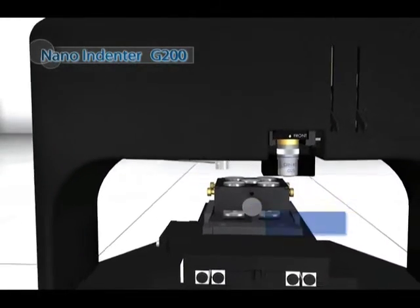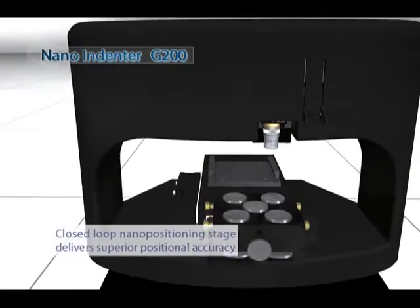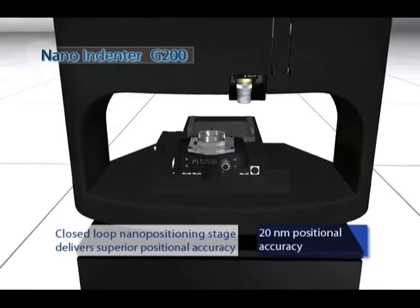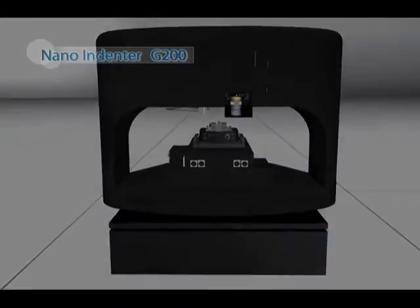For samples that require even higher positional accuracy, the closed-loop nanopositioning stage enables scanning probe microscopy in support of mechanical testing.